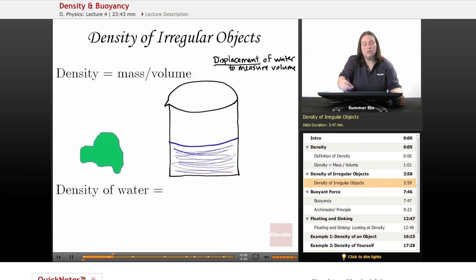We're going to use the displacement of water to measure the volume of an irregular object. It's very easy to find the mass, you just put it on a scale. For volume, we're going to use displacement of water. You have a beaker of water and you take the first measurement of the volume. Let's say it starts off with 100 milliliters of water.